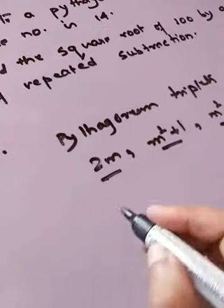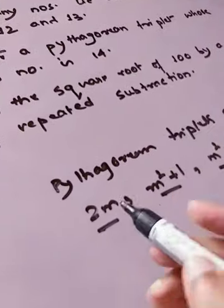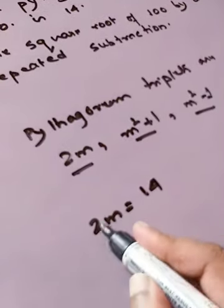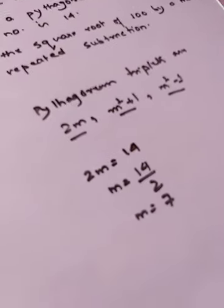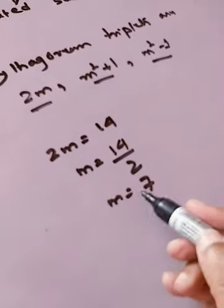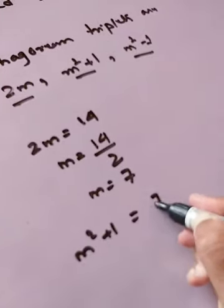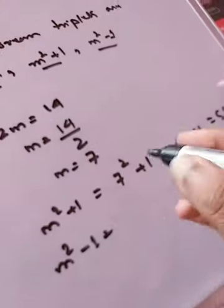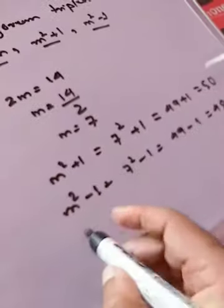If one of the numbers is given as 14, then we compare 14 with 2m. So 2m equals 14, which gives m equals 7. Now compute the other two numbers: m squared plus 1 is 7 squared plus 1, that is 49 plus 1, which equals 50. And m squared minus 1 is 7 squared minus 1, that is 49 minus 1, which equals 48.